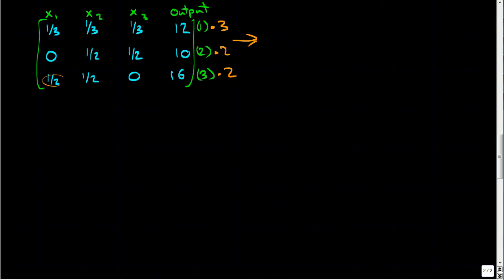So that gives us, we end up with one, one, one, and thirty-six. We still have zero, one, one, and twenty, and one, one, zero, and thirty-two.